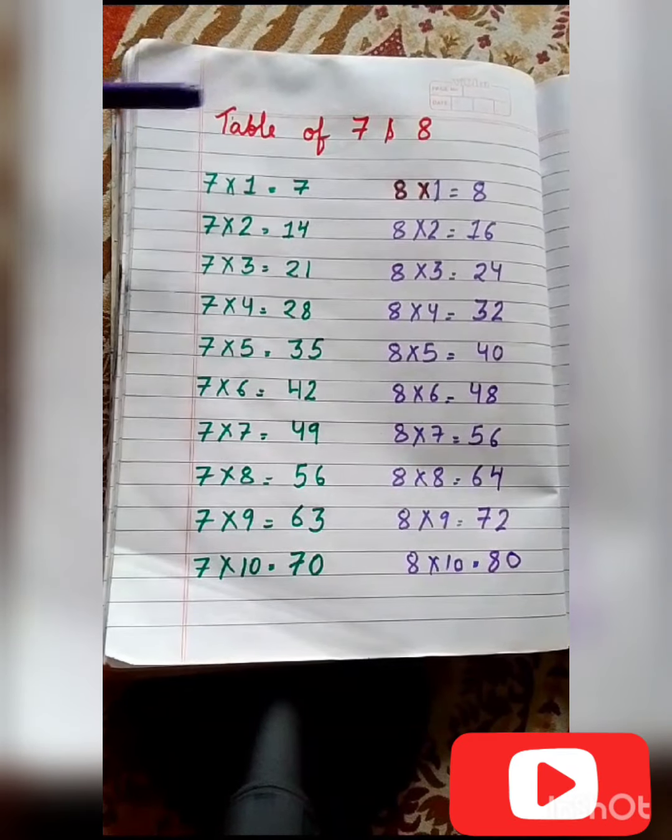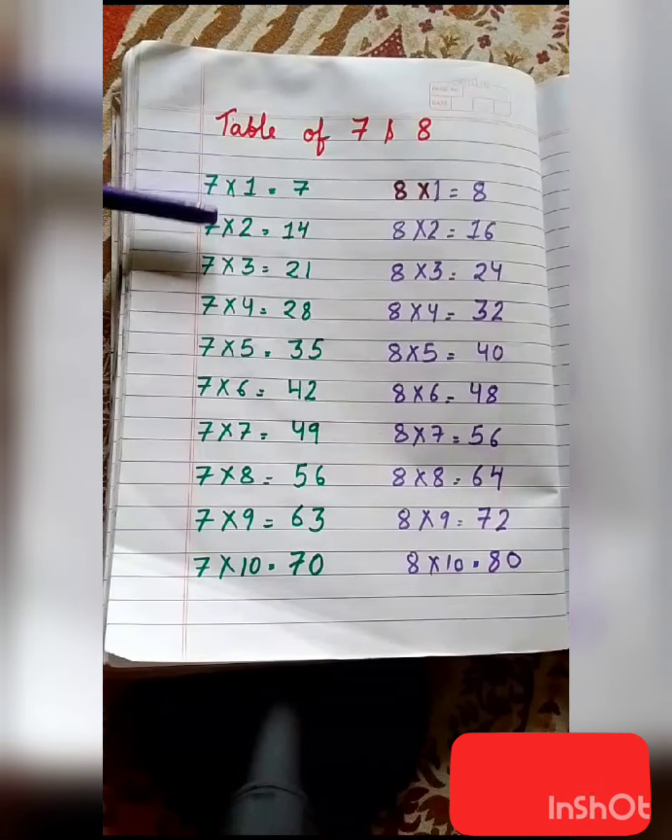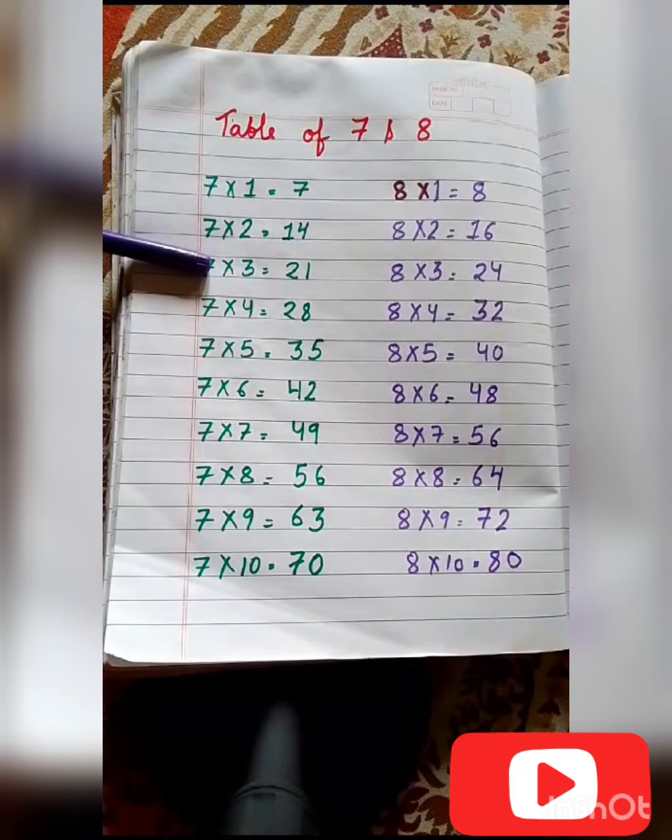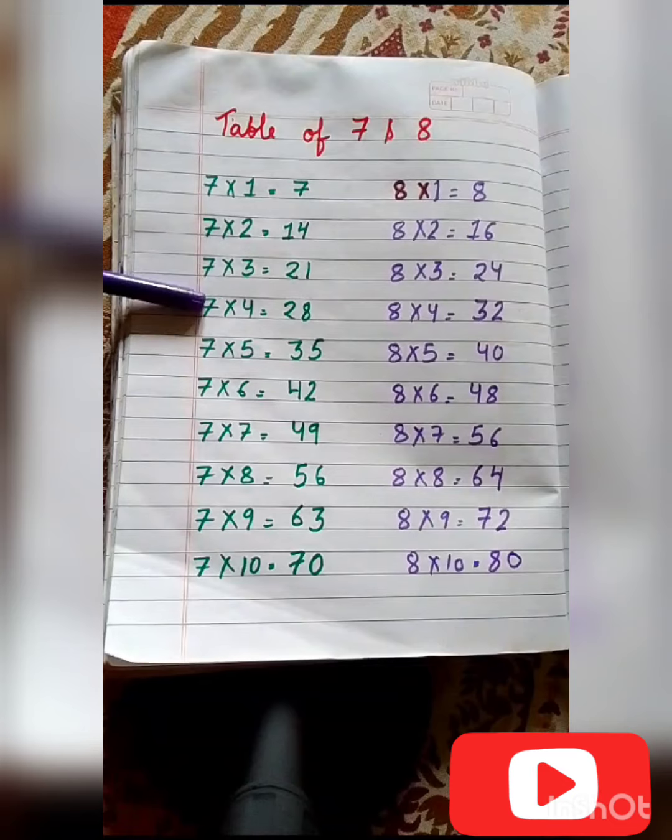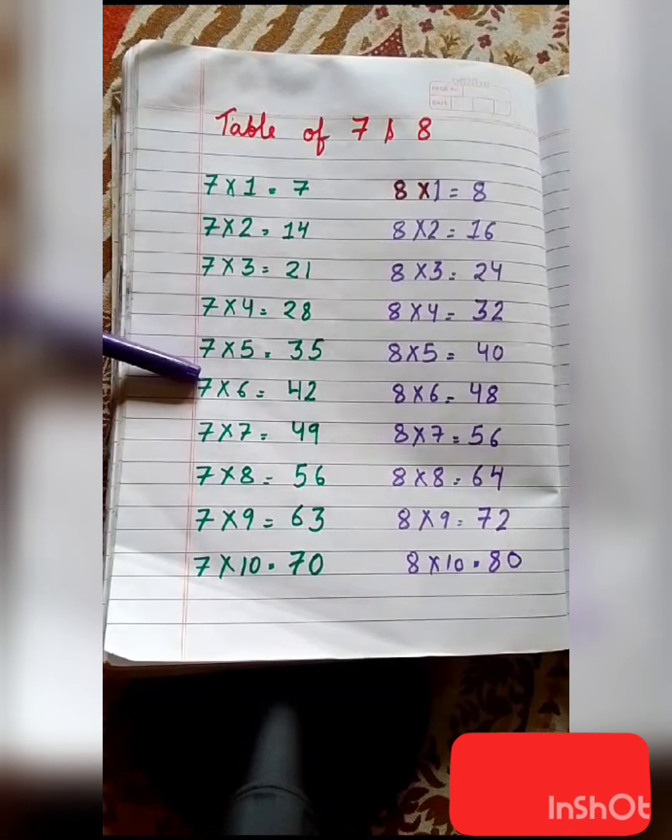Now we will learn the table of 7 and 8. 7 ones are 7, 7 twos are 14, 7 threes are 21, 7 fours are 28, 7 fives are 35, 7 sixes are 42.